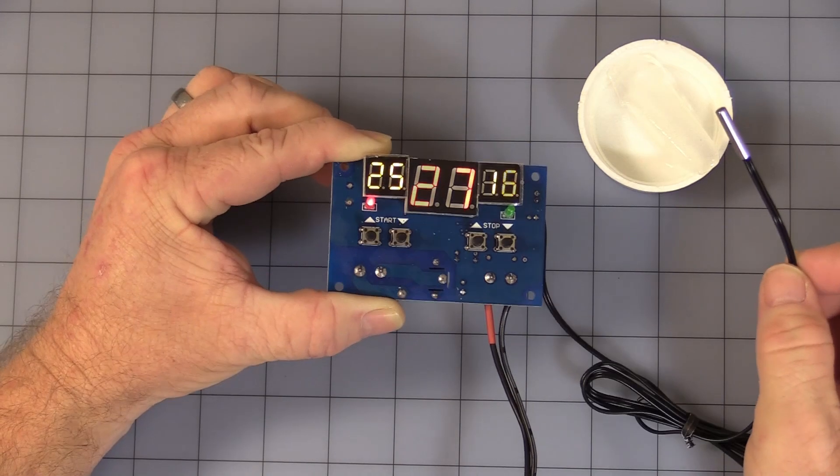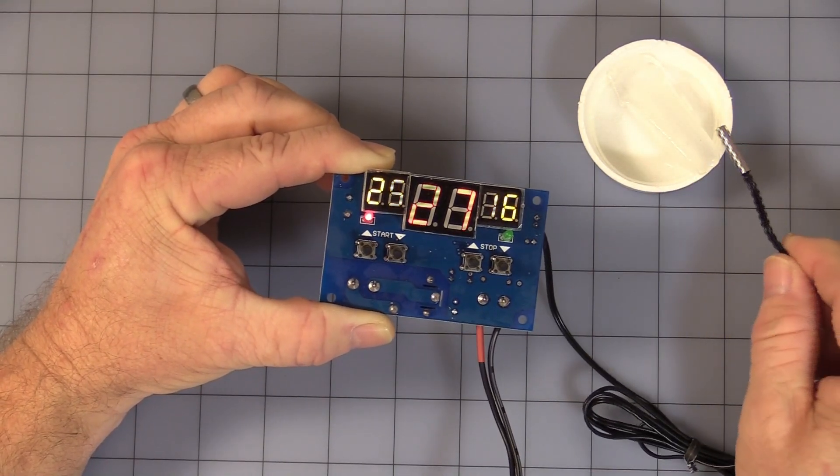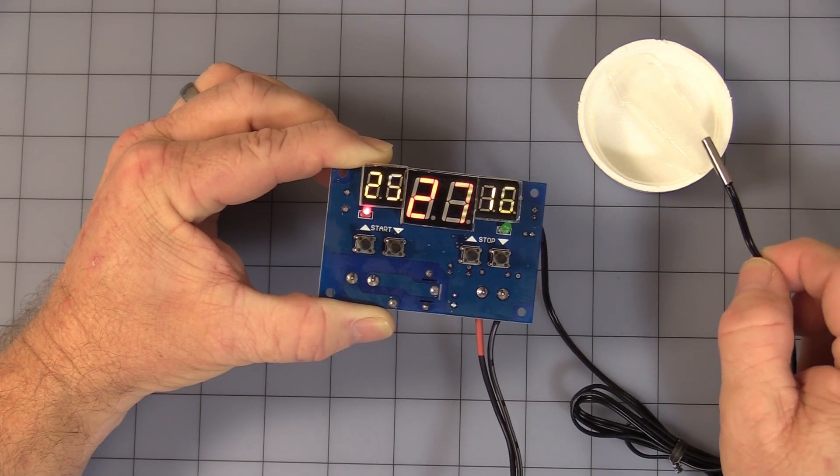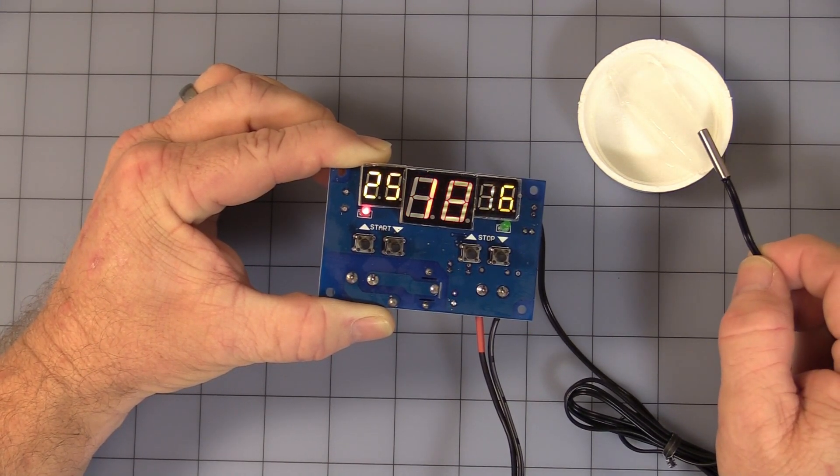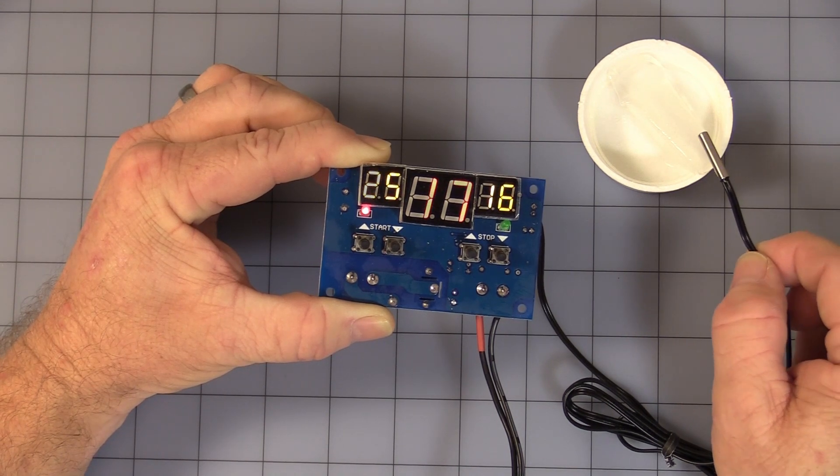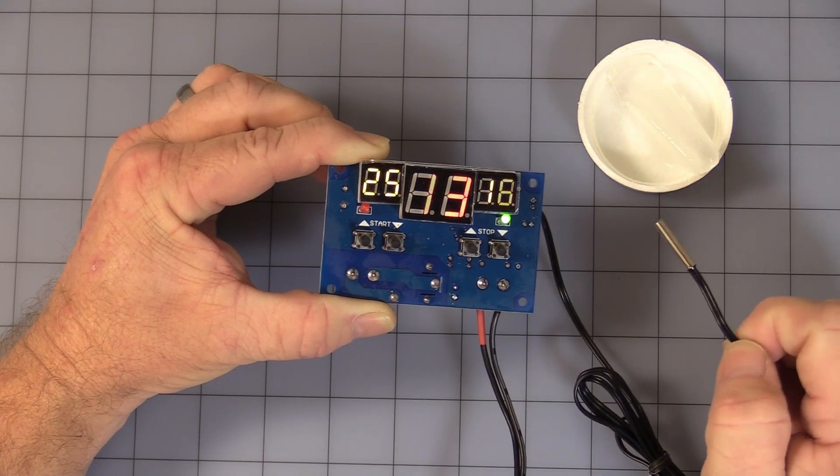I have an ice cube here to help simulate cooling. And you see the temperature start to drop, and when it hits 16, the relay will turn off. There you go. As you can see the green light, the relay turns off. That's cooling mode.